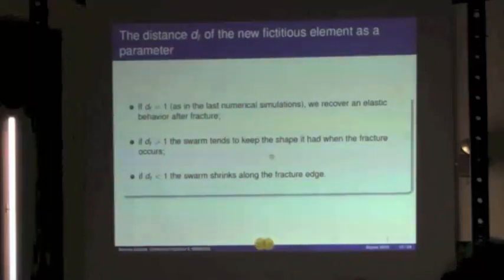While if we vary this parameter, we can obtain some different effects. The first one is a sort of plastic behavior if this parameter is much bigger than one, that tells us that the swarm tends to keep the form it has at the moment of the fracture. While with this parameter less than one, we have the effect of shrinking the swarm along the fracture edge.